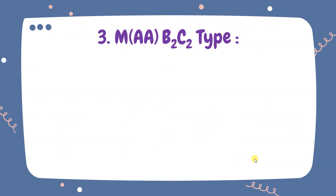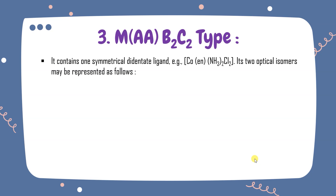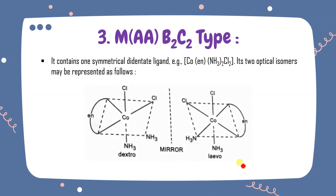For the MAAB₂C₂ type — only one bidentate ligand is present. For example, Co(en)(NH₃)₂Cl₂: its two optical isomers may be represented as follows. With Cl as monodentate ligands, two adjacent same ligands at adjacent positions make it cis — and this arrangement is dextro.